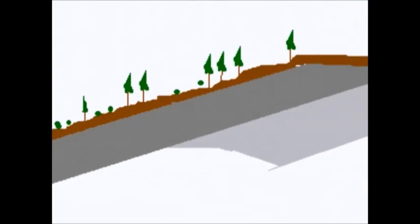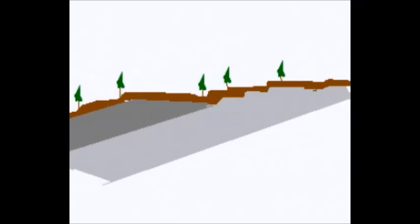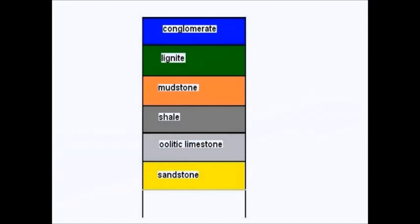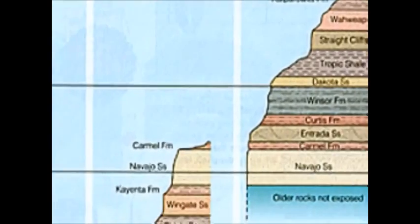Geologists can then follow a single bed to make similar deductions in a different locality. The dark grey bed may be at the surface, or even at a higher point than the others, but it's older than all of them, and the light grey bed is older still. What we end up with is what's called the geological column.